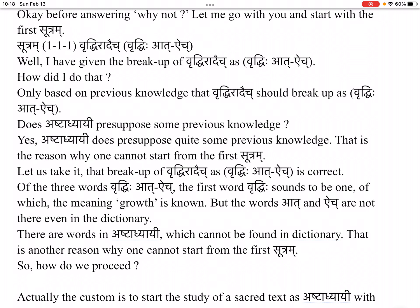Of the three words in Vruddhi-rād-aich, the first word Vruddhi sounds to be one whose meaning — growth — is known. But the words āt and aich are not found even in the dictionary. There are words in Ashtadhyayi which cannot be found in the dictionary. That is another reason why one cannot start from the first Sutra.